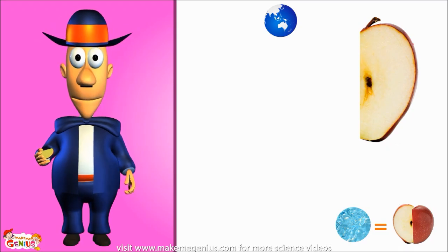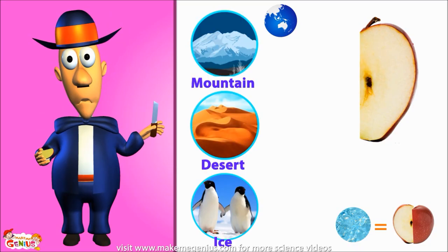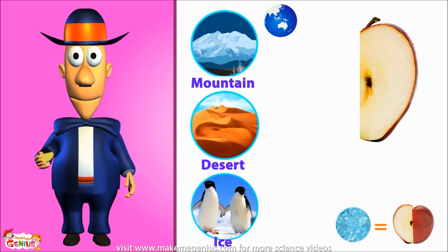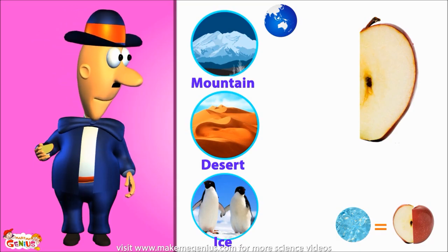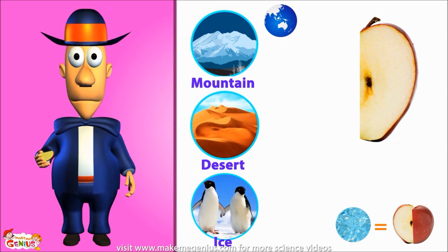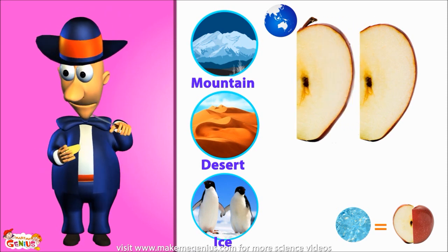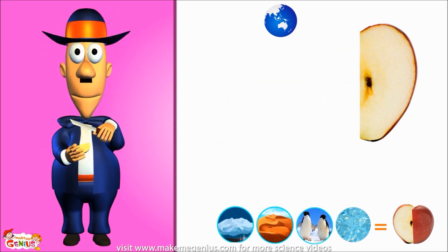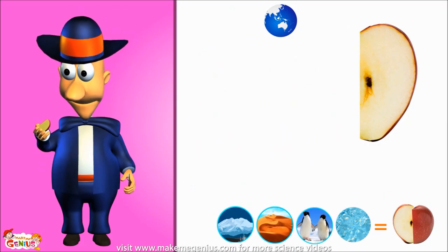But again, we can't use all the remaining land to grow food either. On half of this available land, we have mountains, deserts, and ice, so we can't grow any plants for food there. So let's cut this piece of apple into two parts. Now we're only left with one-eighth part of the Earth.